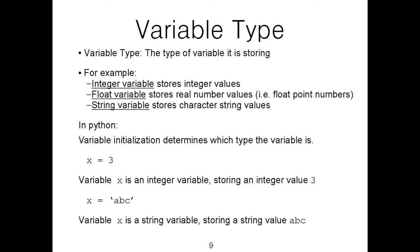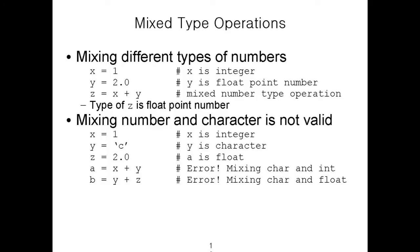Variable type defines what type of information the variable is storing. The most commonly used variable types in Python are: integer — stores integer values; float — stores real numbers such as floating-point numbers; and string — stores a character string, meaning a sequence of characters. In Python, when you initialize a variable it determines the type. For example, if X is initialized with the integer value 3, then X is an integer variable.